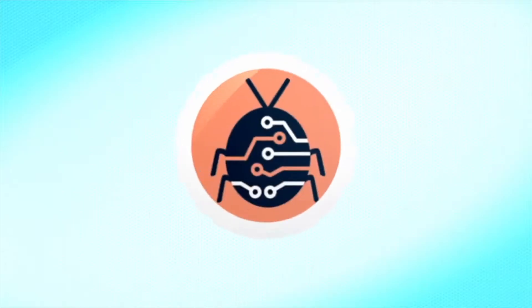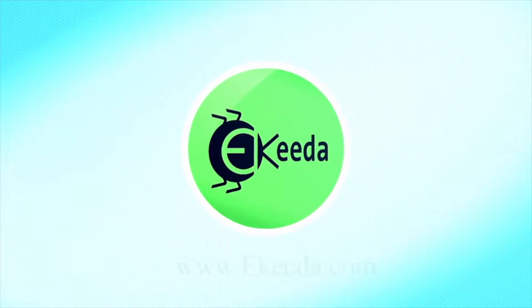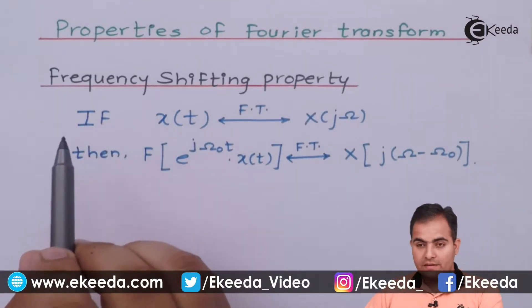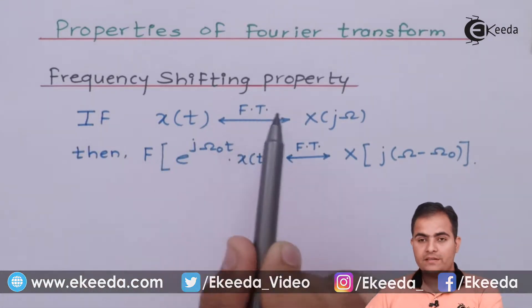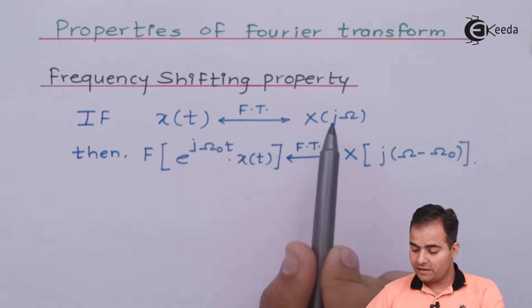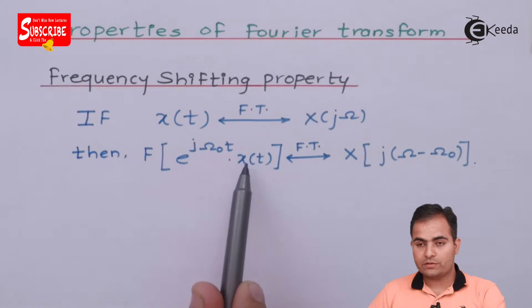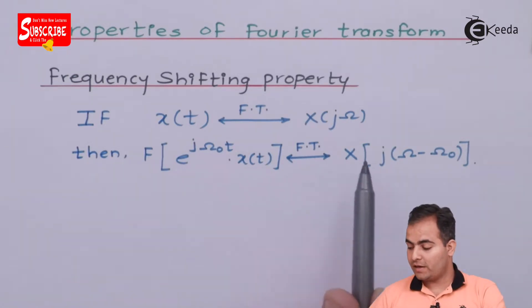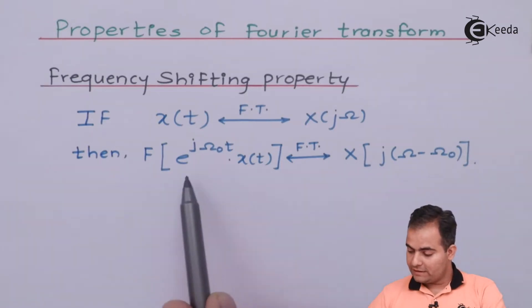So first of all, the frequency shifting property: if the Fourier transform of x of t is represented by X of jω, then the Fourier transform of e^(jω₀t) · x(t) is expressed by X of j(ω − ω₀). This is the statement that we are going to prove.